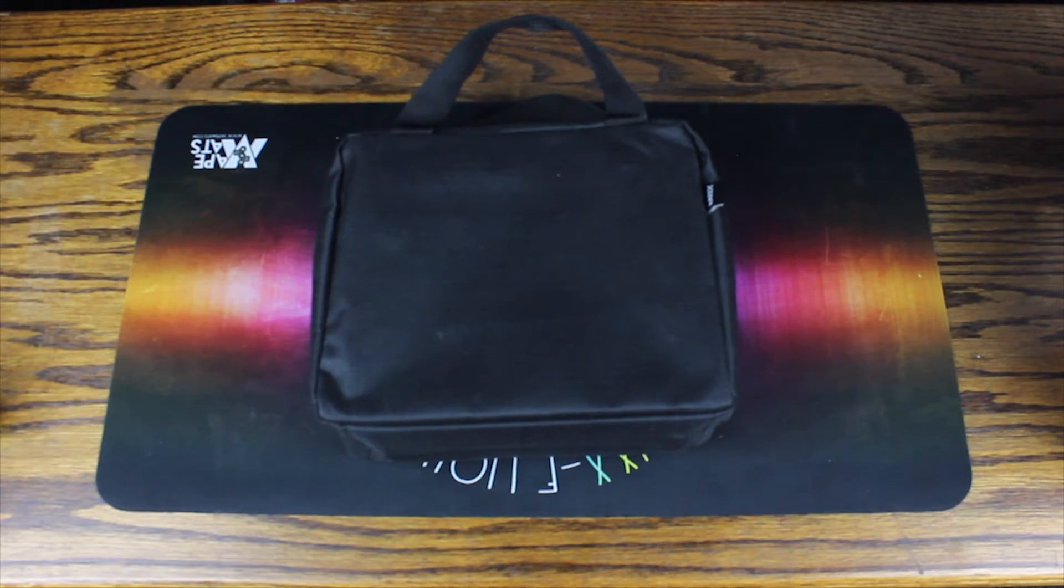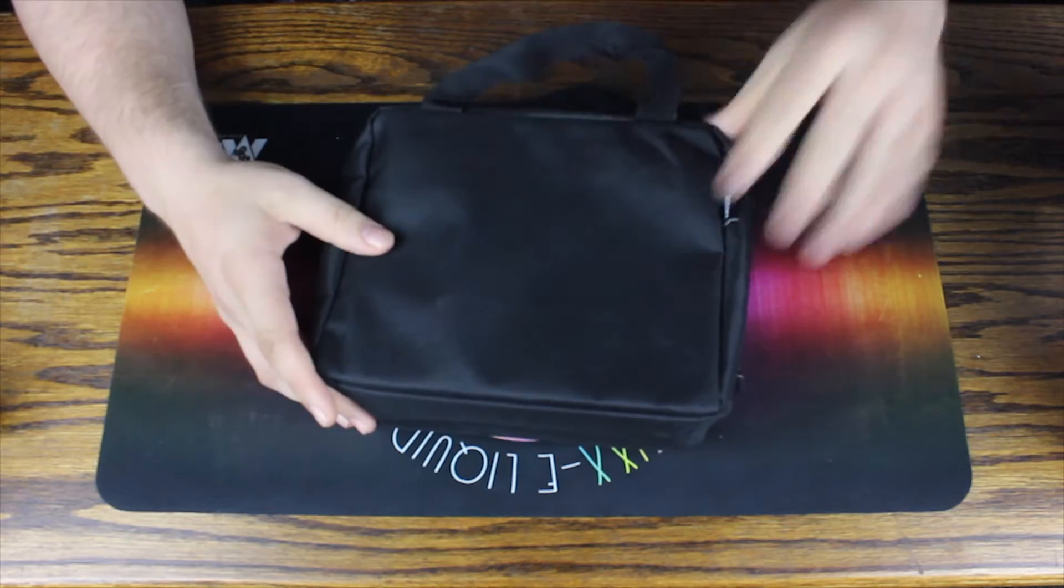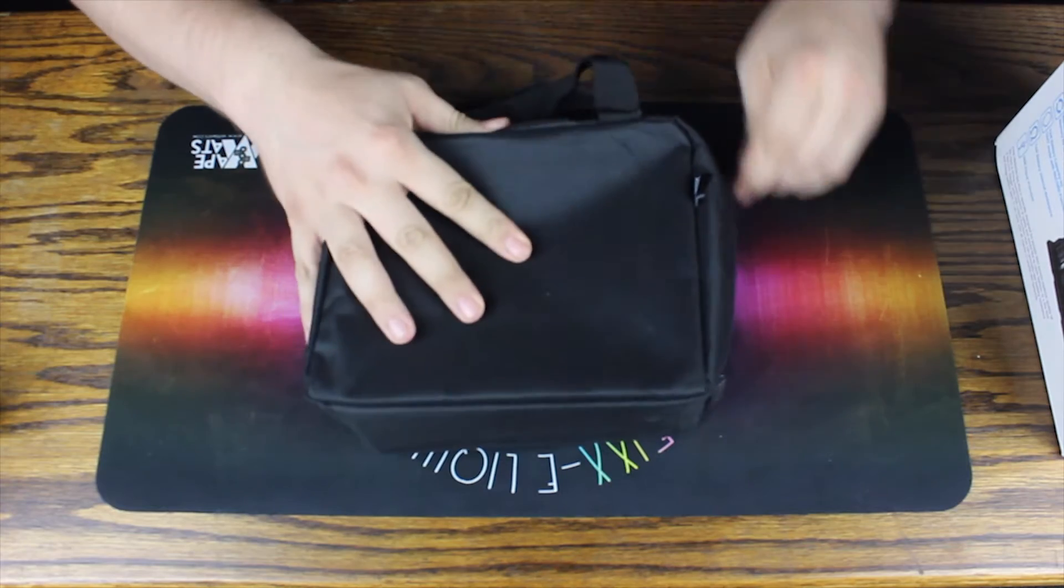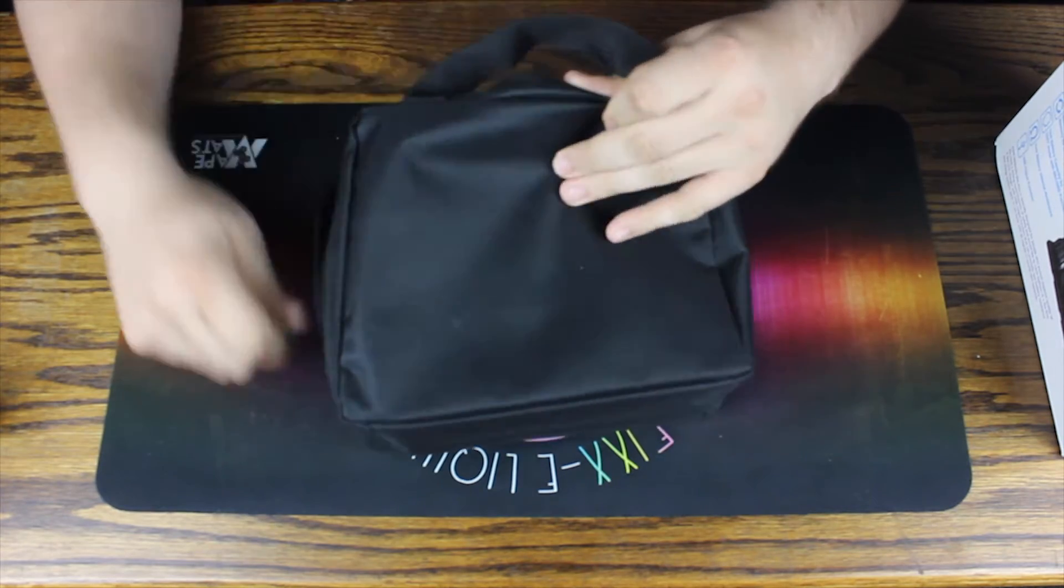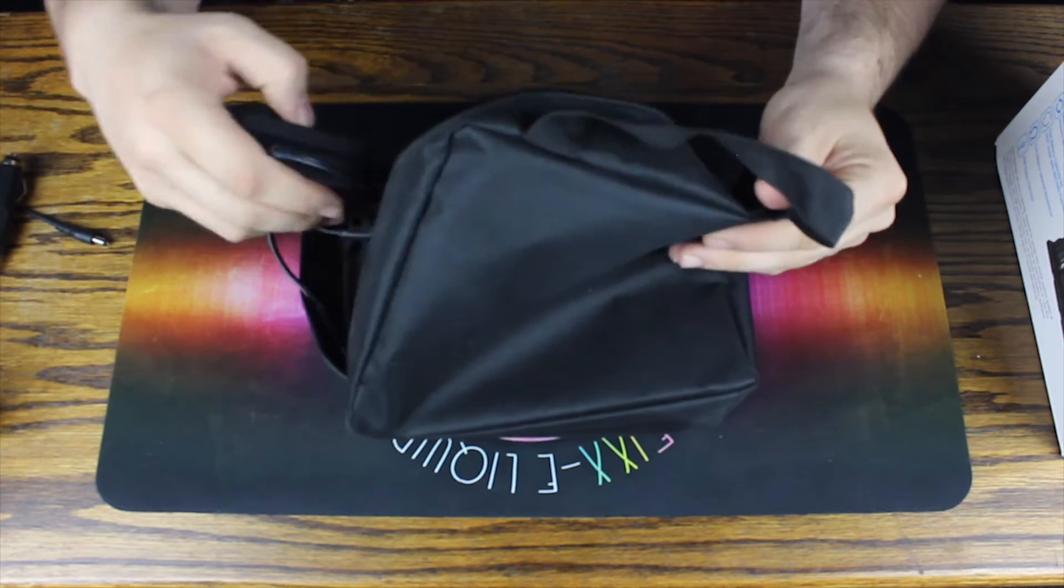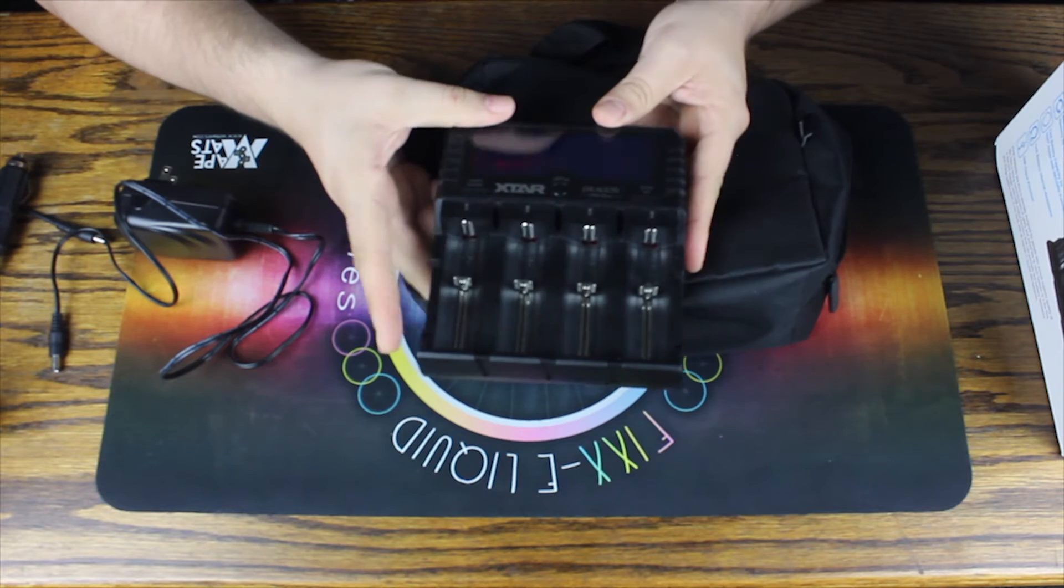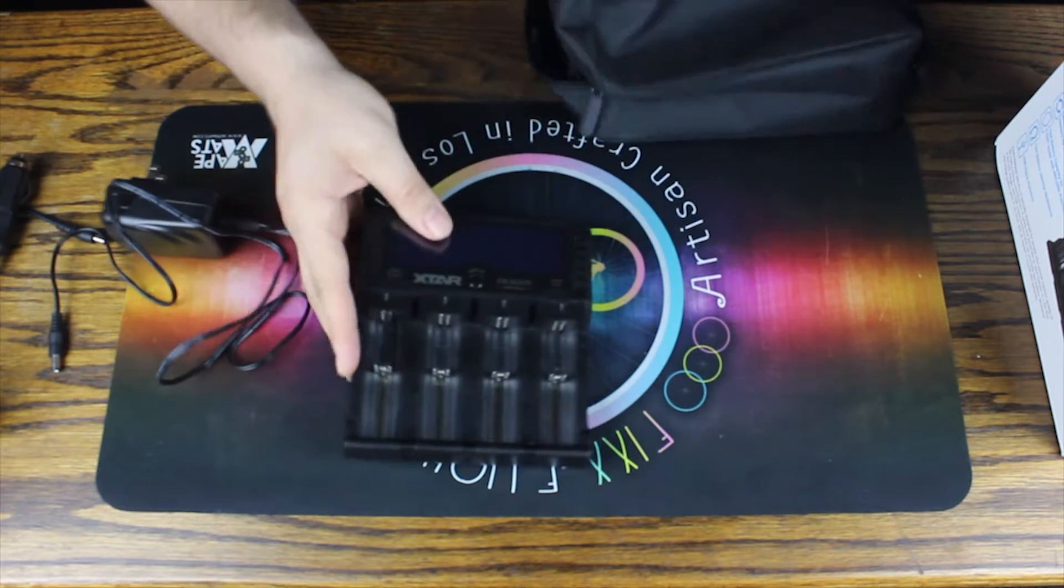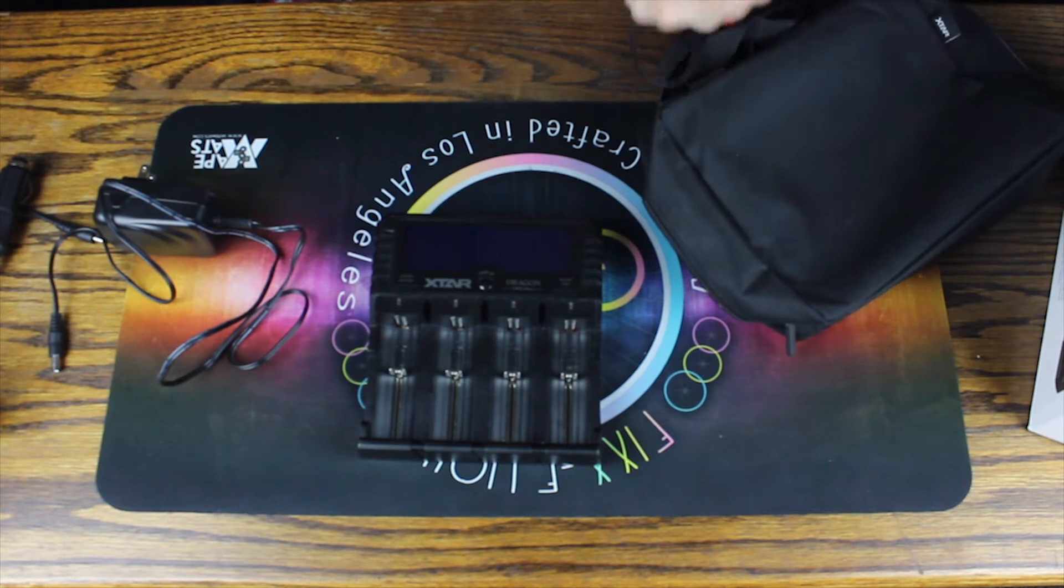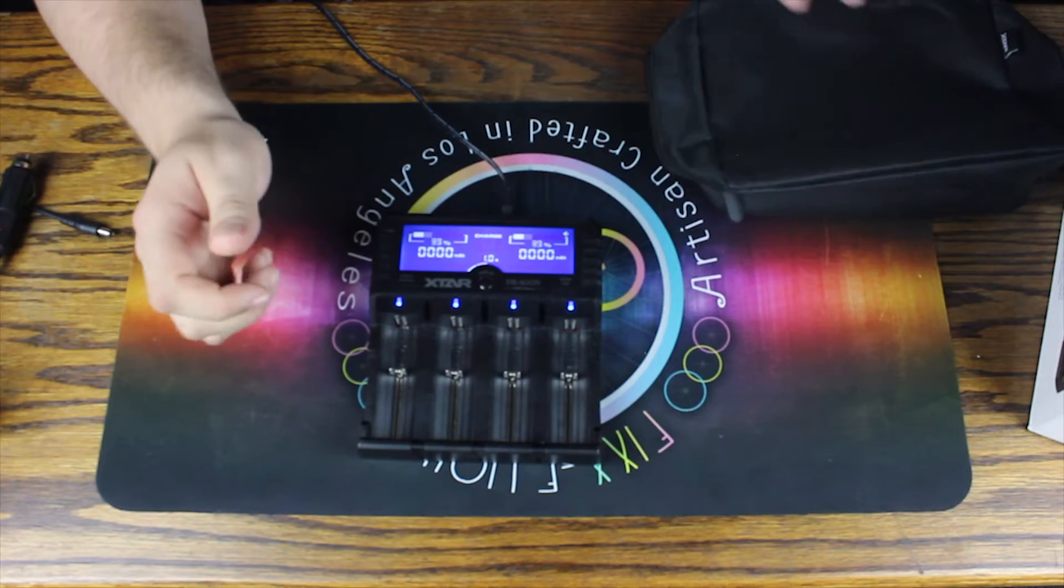Okay guys, we're going to take a look at what we got down below in this nice little Xtar bag. That's pretty much all that was in here, we just pulled it right out. So let's give her an unzip, see what we got. Car charger, power cable, battery charger itself, ooh fancy, and some probes.